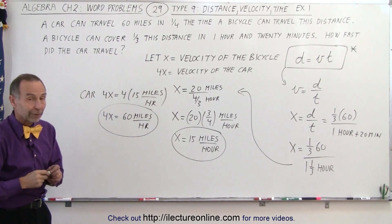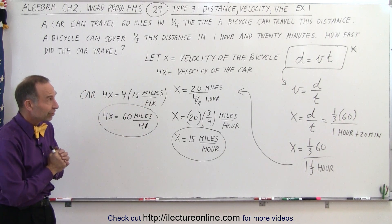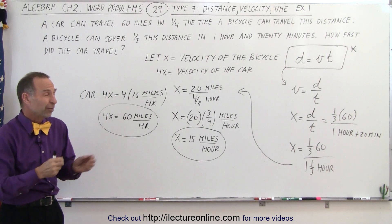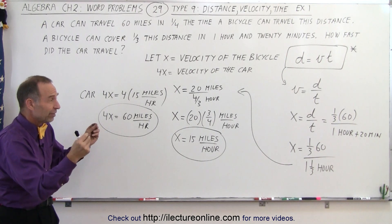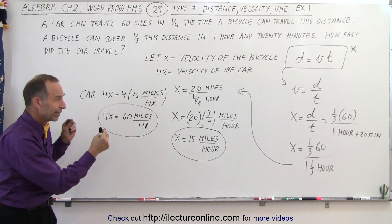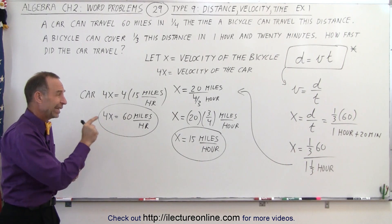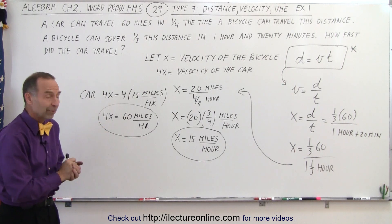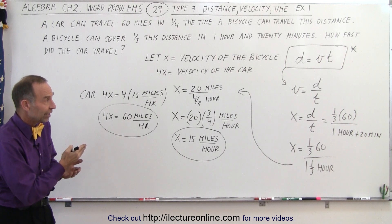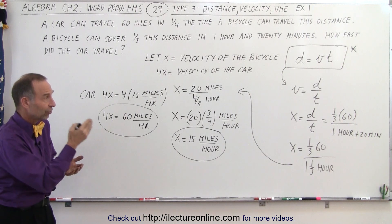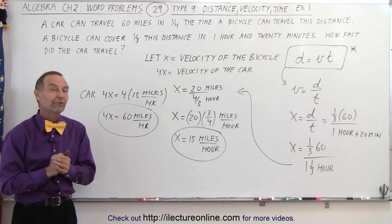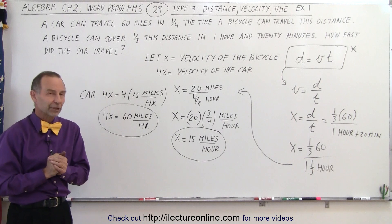The key equation for these types of problems is distance equals velocity times time. Sometimes you need to equate distances, sometimes times. In this case, it was simply a matter of finding velocity as distance over time and relating that to the velocity of the car. And that is how it's done.